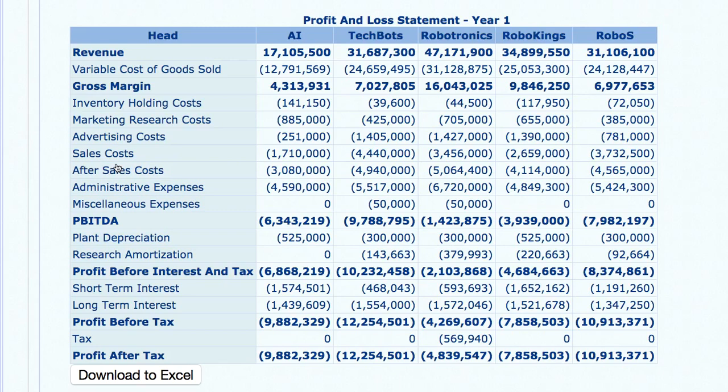Coming to gross margin — let's note down the gross margin for AI, Tech Bots, Robotronics, Robo Kings, and Robo S. The company with the highest gross margin — gross margin divided by revenue as a percentage — is Robotronics at close to 33%, while the least gross margin is with Tech Bots at around 20 odd percent.